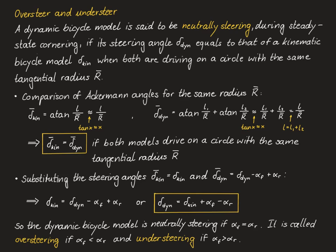The dynamic bicycle model is called oversteering if the slip angle of the front wheel is less than the slip angle of the rear wheel.